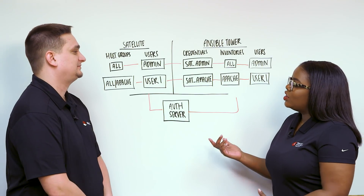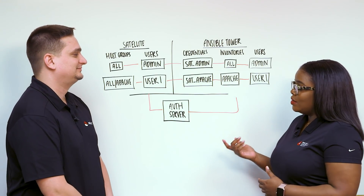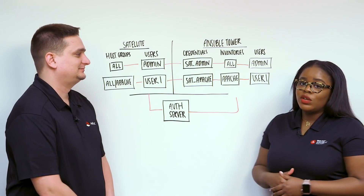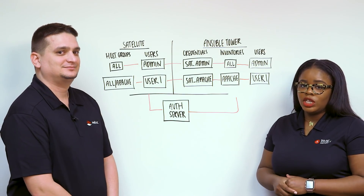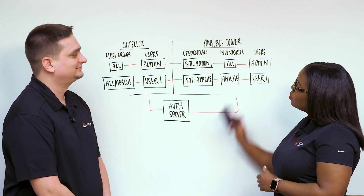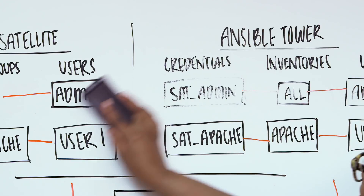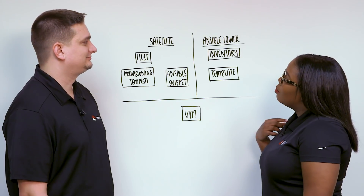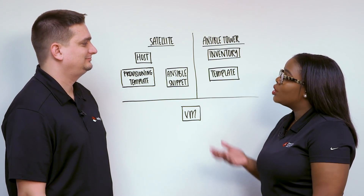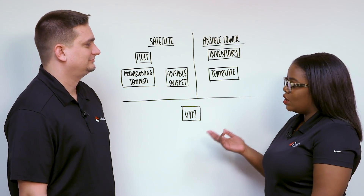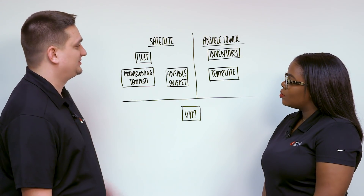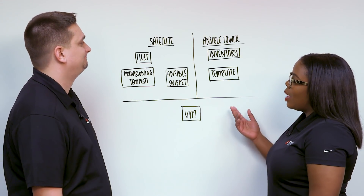Now I understand the benefits of using satellite-based inventories to enhance your Ansible Tower setup. Now on to the second use case mentioned — provisioning capabilities. Now on to our new diagram. Nick, when integrating both Satellite 6 and Ansible Tower, which component of Satellite 6 is executing the task from the Ansible playbooks? It's going to be our provisioning templates. Can you elaborate on that process?